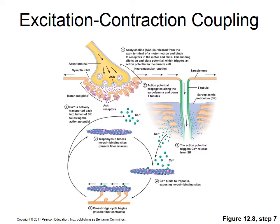At the neuromuscular junction, the axon terminal of a motor neuron is filled with synaptic vesicles containing acetylcholine. An action potential comes down the motor neuron, opening voltage-gated calcium channels on the axon terminal, causing exocytosis of neurotransmitter. Acetylcholine is water-soluble and diffuses across the synaptic cleft, binding to nicotinic cholinergic receptors on the motor end plate.